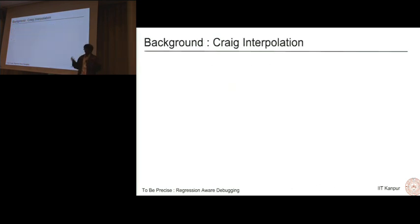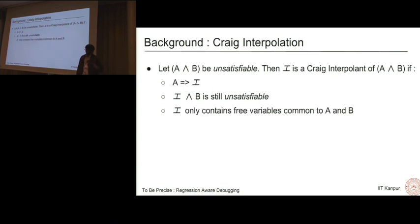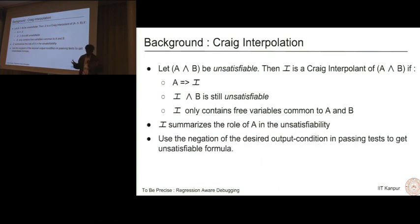A sidetrack to introduce Craig interpolation. If we have a formula A and B which is unsatisfiable, then I is a Craig interpolant of A and B if A implies I, I is a weaker form of A. I and B is still unsatisfiable. And I only contains free variables that are common to A and B. Intuitively, this I summarizes the role of A in the unsatisfiability. It disregards all the useless parts and just concentrates on the core of A that was responsible for unsatisfiability. To use this in a passing test case, we need an unsatisfiable formula. What we do is negate the desired output condition.